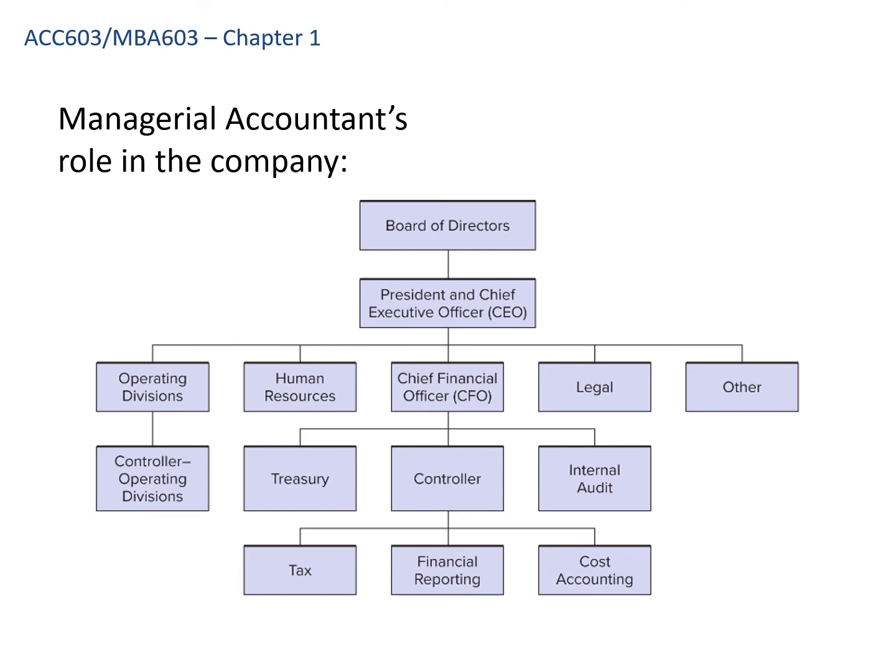Every organization is different, but here's an example of an organizational chart. Different divisions report to the president/CEO, who ultimately reports to the board of directors — the ultimate owners. There are operating divisions that make products or supply services, HR as a staff position supporting other departments, the financial area, legal, and others like marketing or IT. Within the financial area, the primary person doing management accounting is the controller.